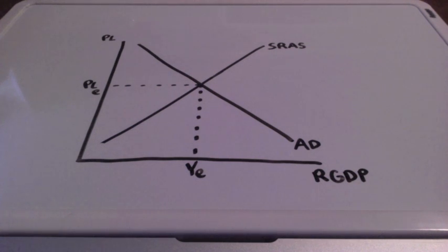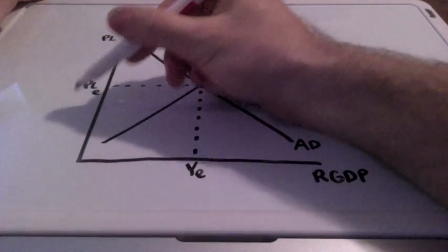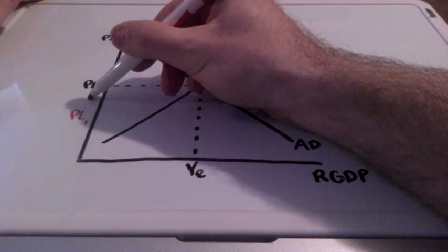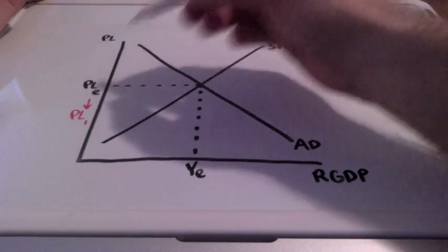In this example, we're going to start at equilibrium again, but our price level is going to go down from our equilibrium price to price level one.